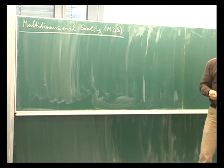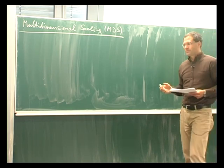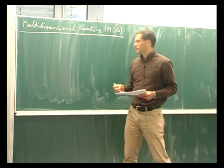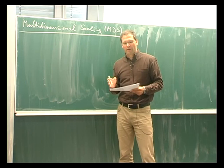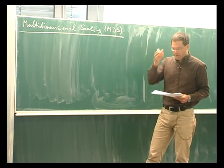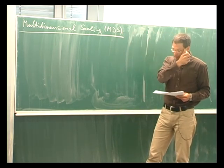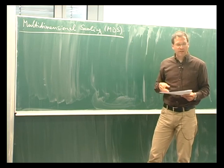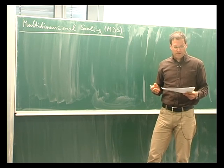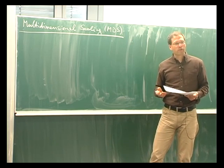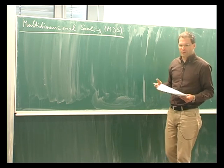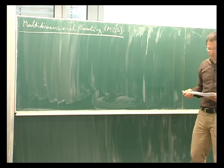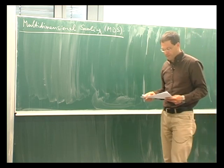So usually we have already a set of points and we want to reduce or find a low dimensional representation for those same points. In multi-dimensional scaling however, you start with a set of dissimilarities and then you try to find a low dimensional embedding that faithfully represents those original dissimilarities.